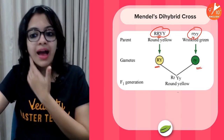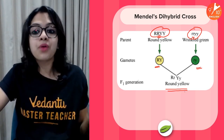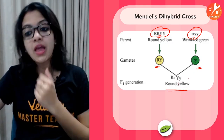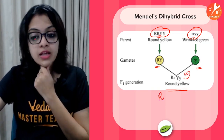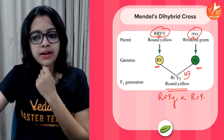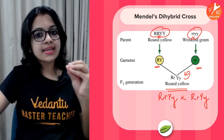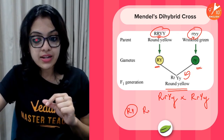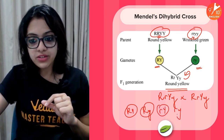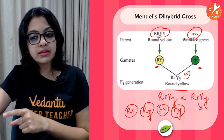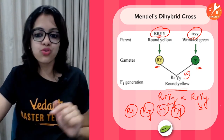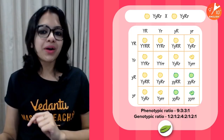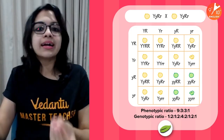The F1 generation were all observed to have only the dominant trait — round and yellow. Mendel then self-fertilized the F1 plants. Since the F1 genotype is RrYy, four different types of gametes are produced. Four times four gives 16 combinations in the Punnett square. This is how you work out the combinations of gametes in a dihybrid cross.